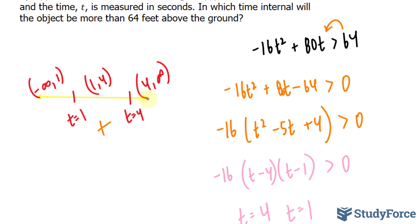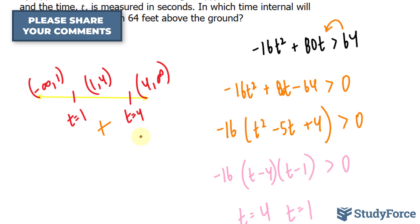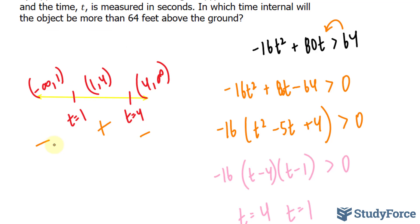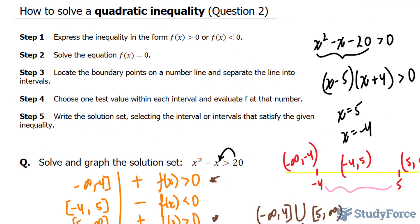If you place a number that's greater than 4 into this equation, you should end up with a negative number. Similarly, a negative number for this boundary. So only numbers between 1 and 4 make this inequality true. That's the answer to question number 2, and that is how to solve a quadratic inequality.